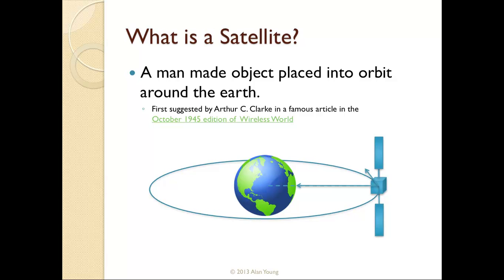What is a satellite? Quite simply, it's a man-made object placed into orbit around the Earth. It's in orbit, so it's continuously going around, and we're going to talk a little bit about what an orbit is and some of the mathematics in a light way of an orbit. First suggested by a gentleman by the name of Arthur C. Clarke in a famous article that he wrote for Wireless World in 1945. I've put a link to the article in the presentation materials, and I suggest that everybody reads that article after they've gone through this course.